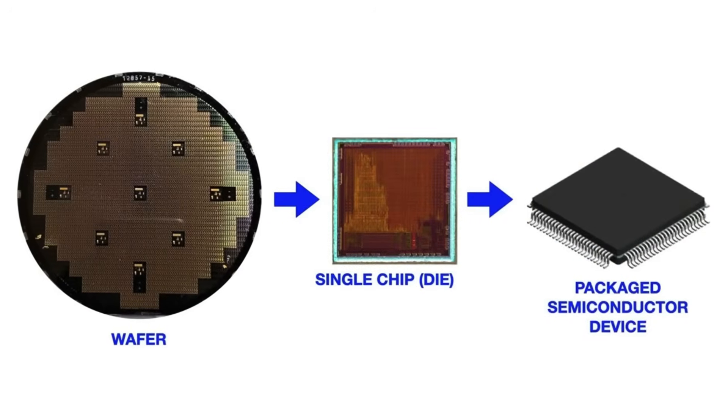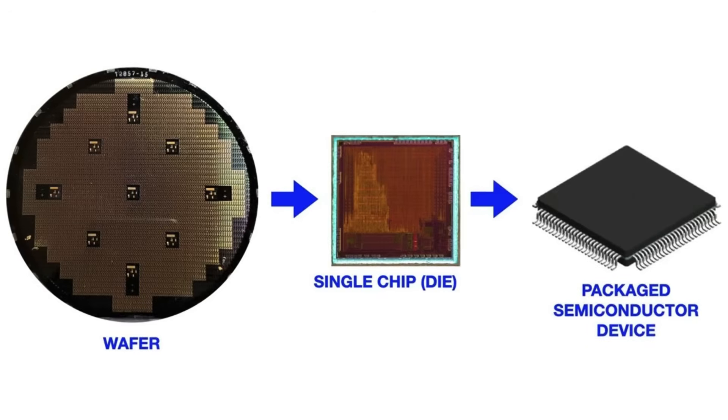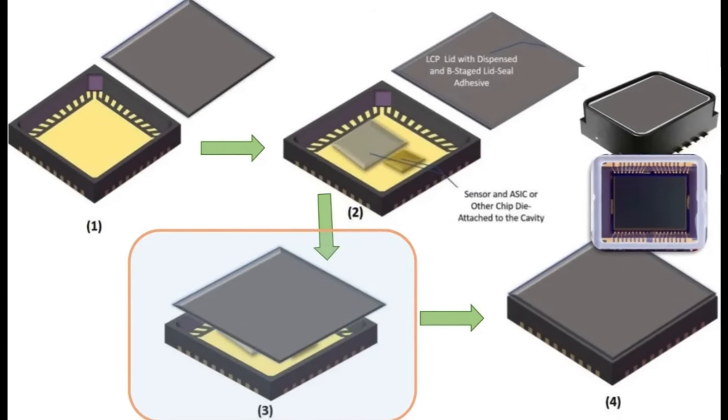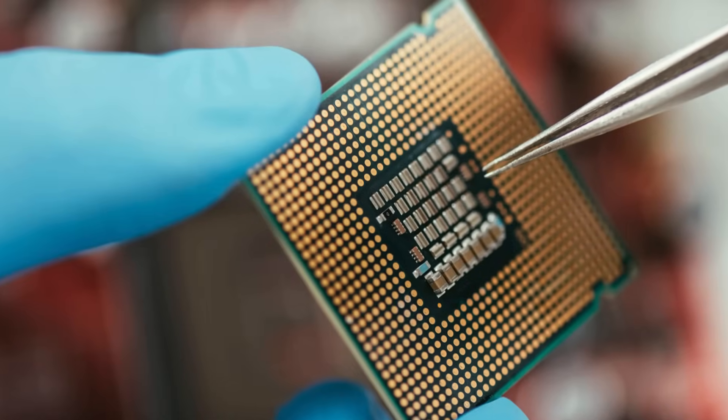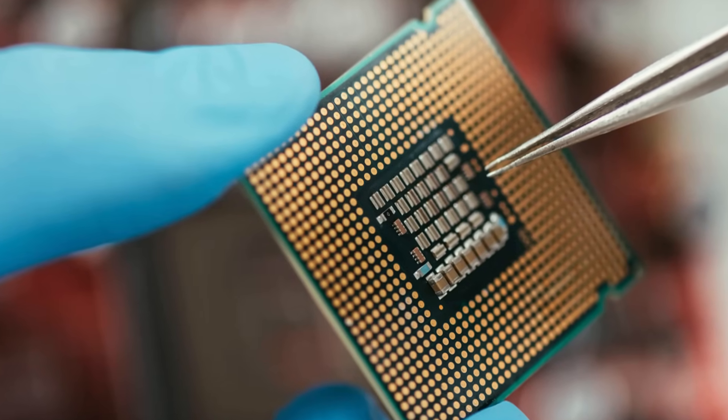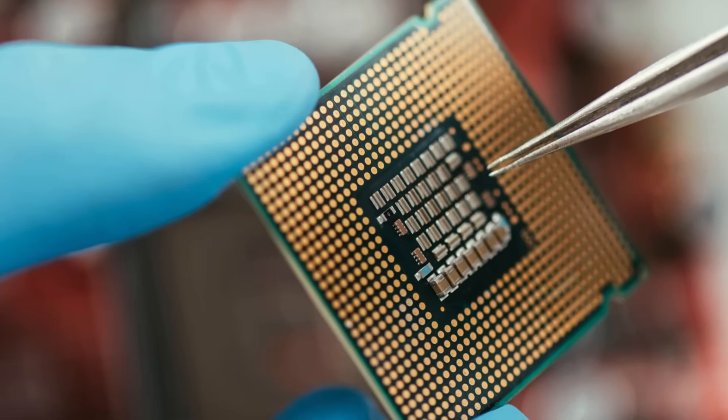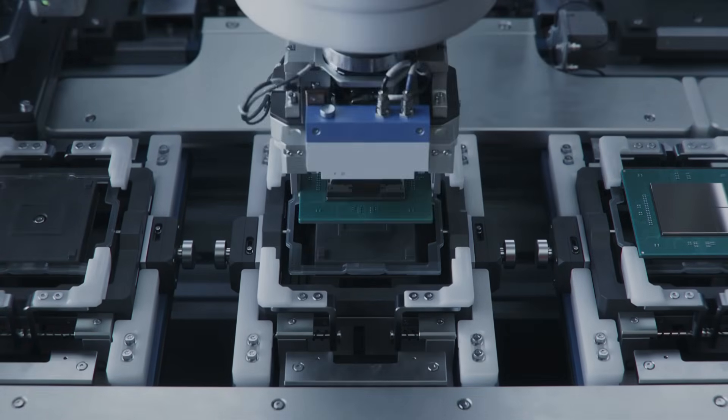Packaging involves mounting the chip onto a substrate, connecting it to external leads or solder bumps, and encapsulating it in a protective material such as plastic or ceramic. The final packaged chip is then tested once more to ensure it meets performance specifications before being shipped to manufacturers for use in consumer electronics.